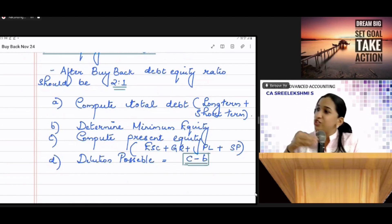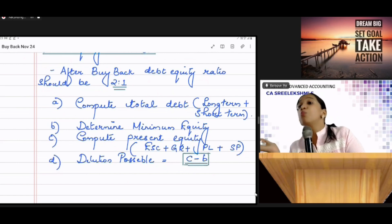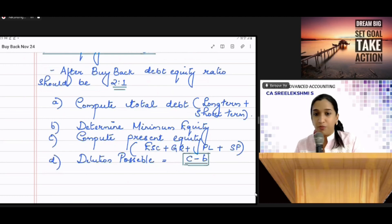Identify the present equity. Share capital, general reserve, P&L, premium. Find out dilution possible. Present equity should be always more than the minimum equity. So, that is the dilution possible. Dilution possible divided by buyback price plus face value is the number of shares that can be bought back.